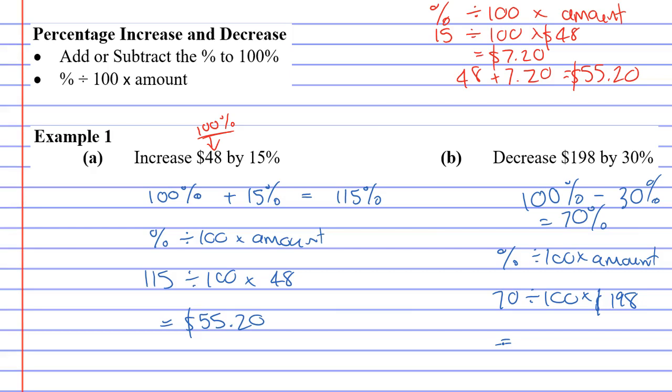It gives us $138.60. And we know we don't have to do any additional subtraction. We have decreased $198 by 30%.